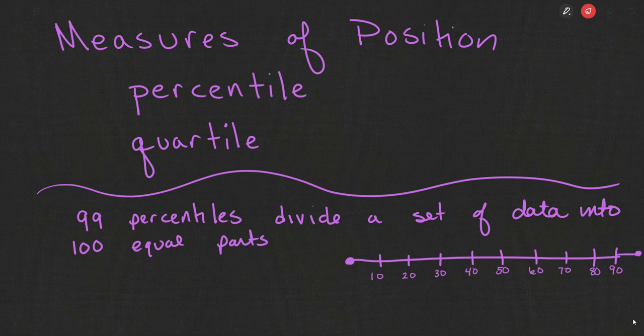To help you better understand this, you can think of this statement about percentiles: the 99 percentiles that are possible, so it's always 99 regardless of how many pieces of data there are. Those 99 percentiles divide a set of data into 100 equal parts. So if we went from 1 up to 99, we would get 100 equal parts if we wrote in the 99 percentiles.